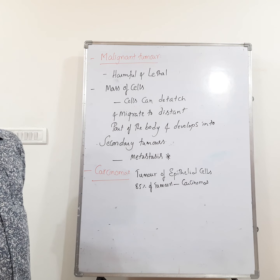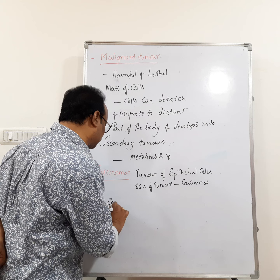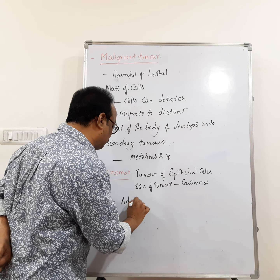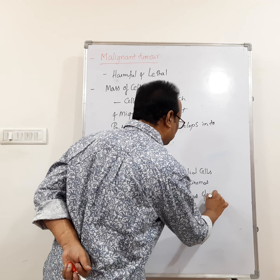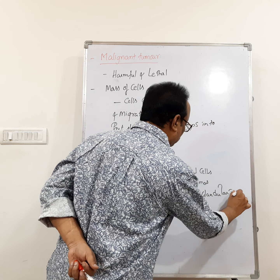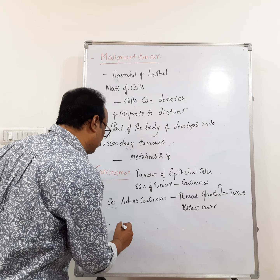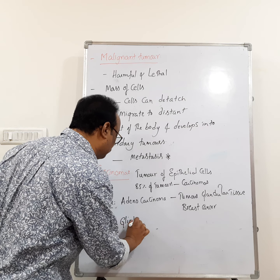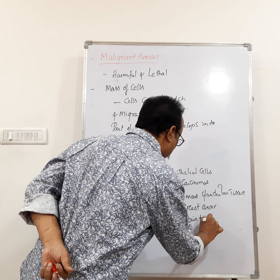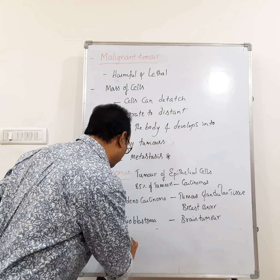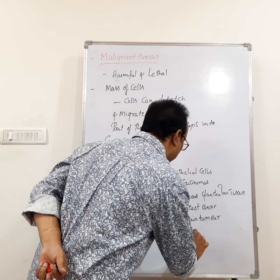Examples of carcinomas include: adenocarcinoma, which is the tumor of glandular tissue — for example, breast cancer; glioblastoma, which is brain tumor; and renal carcinoma, which is kidney cancer.